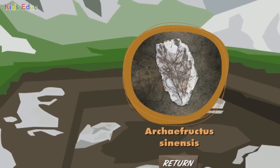Archefructus sinensis. Wow, this is a very good find. This is one of the oldest known flowering plants — you can see almost all of its parts. It's called Archefructus sinensis, and it's probably more than 125 million years old. This plant had small fruits and grew in swampy regions near modern-day China.